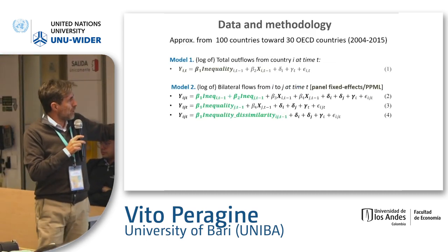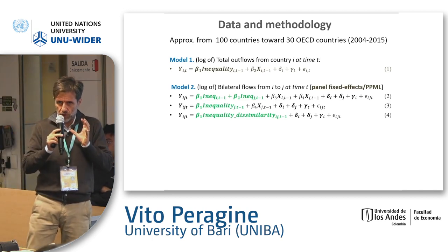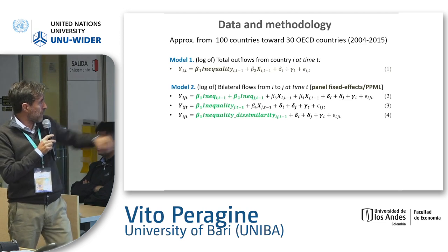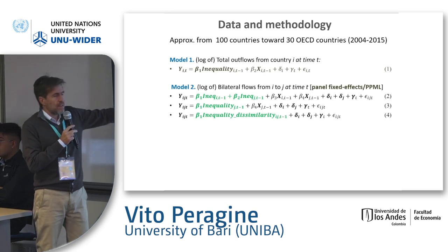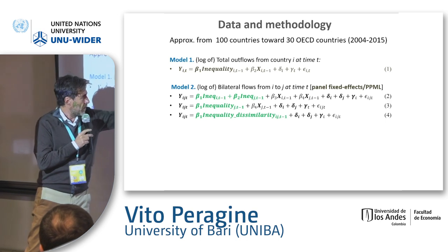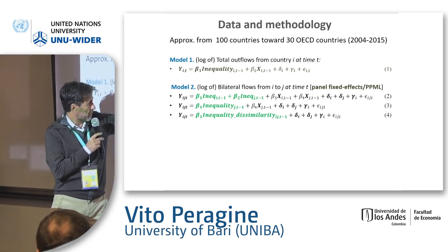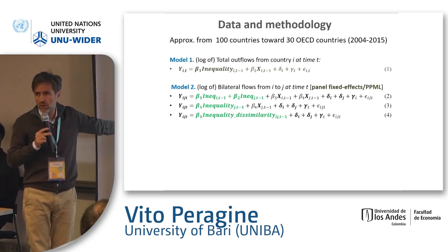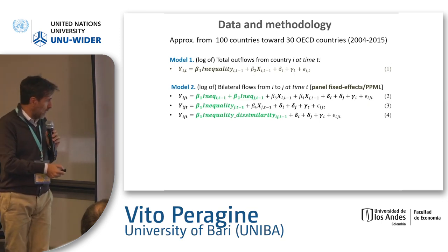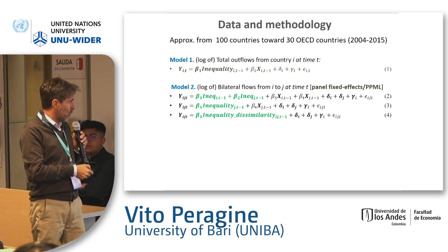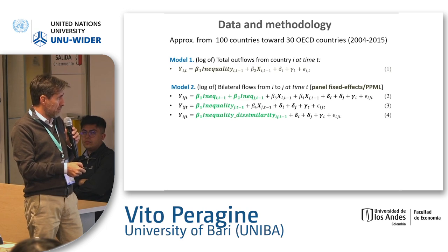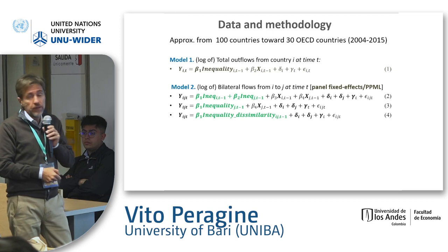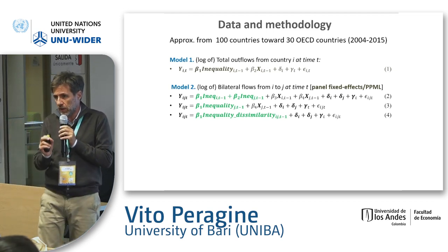These are the models we test, still within the first issue: the effect of inequality on migration. Model one tests the total outflow from country i at time t, with country and time fixed effects, to see if it depends on inequality in country i. Model two uses bilateral flows from country i to country j, with inequality in both countries i and j, and also includes an inequality dissimilarity term — the absolute difference in the Gini coefficients of the two countries.